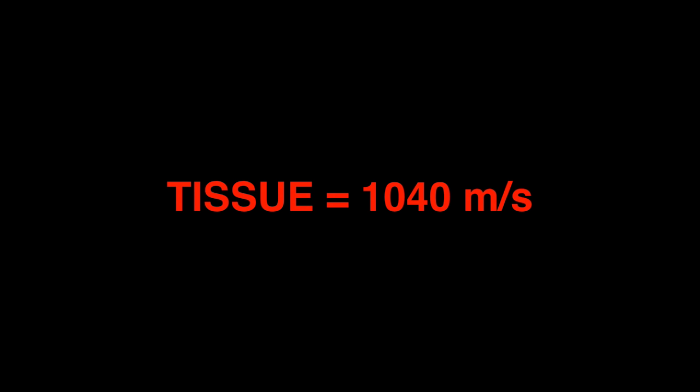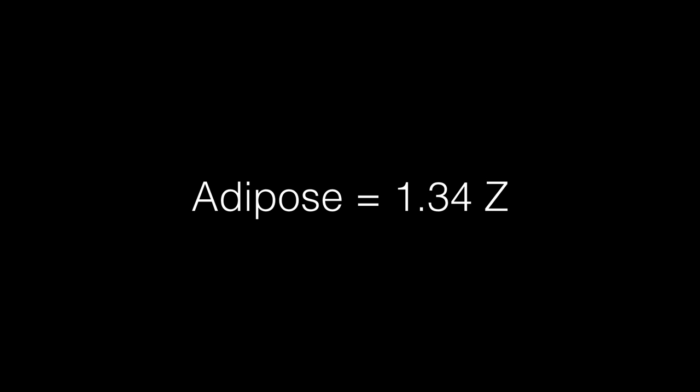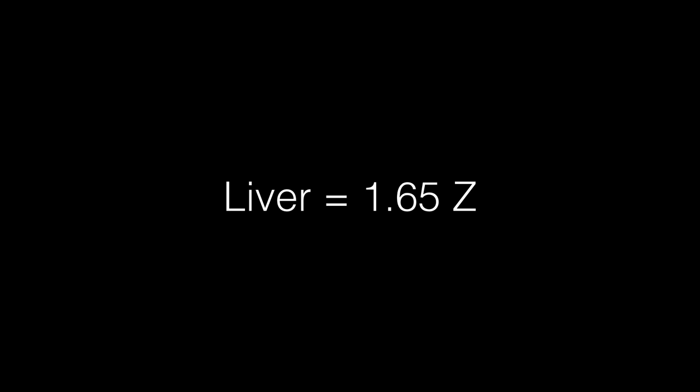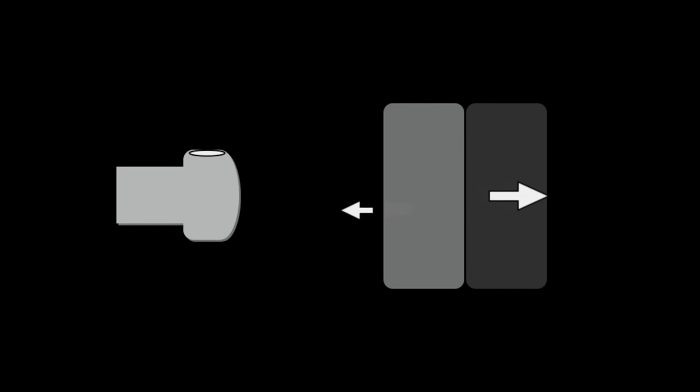The machine assumes we are all made of homogenous tissue with sound traveling at 1,540 meters per second. Acoustic impedance is the resistance to propagation of sound, dependent on the density and velocity of sound, measured in megarayls. Air has very low acoustic impedance, bone has very high acoustic impedance, adipose is mid-range at 1.34 megarayls, and liver is 1.65 megarayls. The greater the difference in acoustic impedance between two tissues, the more sound is reflected back to the transducer, making a brighter echo.